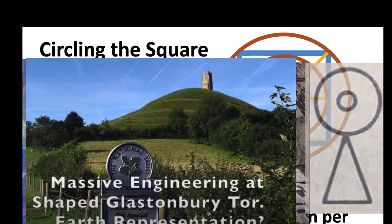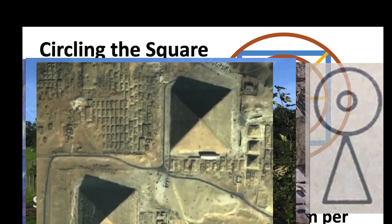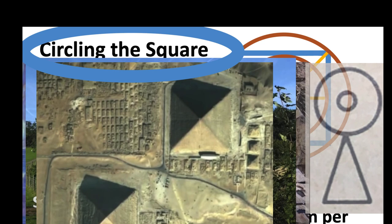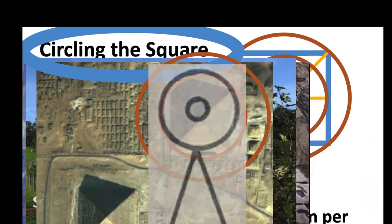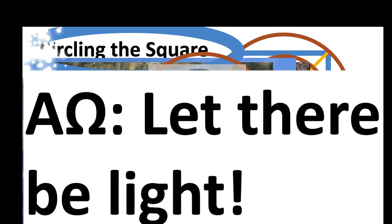They're symbolizing the powerful mother-father of creation, the Alpha and Omega creating and saying, let there be light. Circling the square, which connects to the speed of light, is saying let there be light.